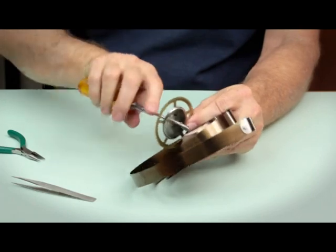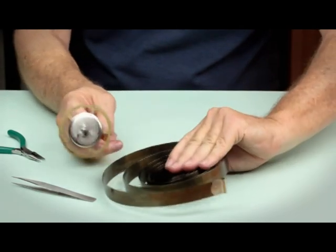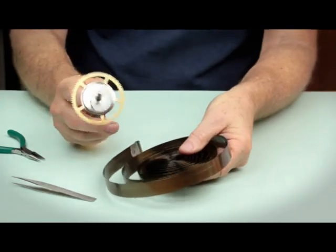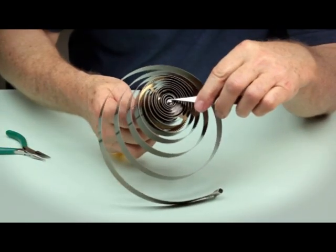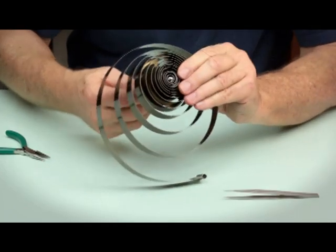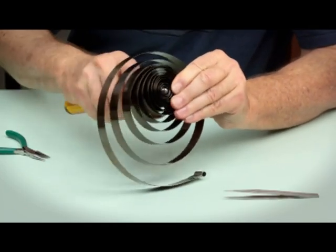Make sure the spring hook on the winding arbor catches in the hole in the center of the mainspring. If it doesn't catch, you won't be able to wind the spring.